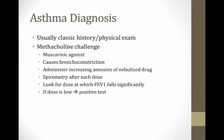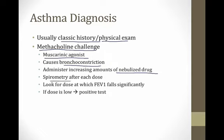Usually we diagnose asthma based on a classic history and physical exam, but sometimes the diagnosis is not clear. There is a test called a methacholine challenge. Methacholine is a muscarinic agonist that activates the parasympathetic system in the lungs and causes bronchoconstriction. In a methacholine challenge, you administer increasing amounts of the nebulized drug and do spirometry after each dose, looking for the dose at which FEV1 falls significantly. If it doesn't fall, the test is negative; if FEV1 falls at a low dose, it's a positive test suggestive of asthma.